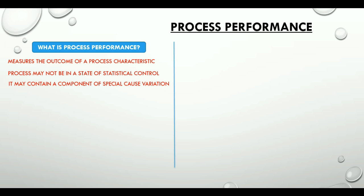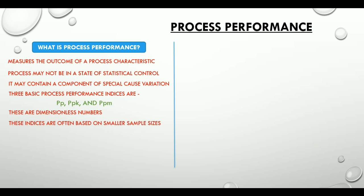Like process capability, process performance also has three basic types of performance indices: PP, PPK and PPM. And again, all these three are dimensionless numbers. These indices are often based on smaller sample size. If you remember, when we talked about process capability, it was bigger or large enough sample sizes.